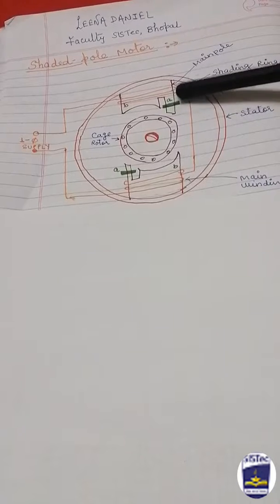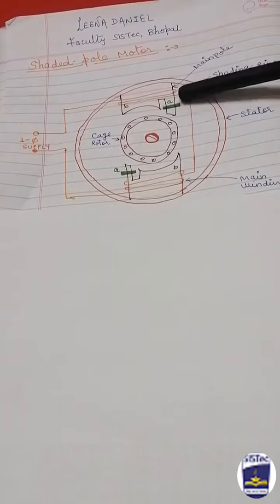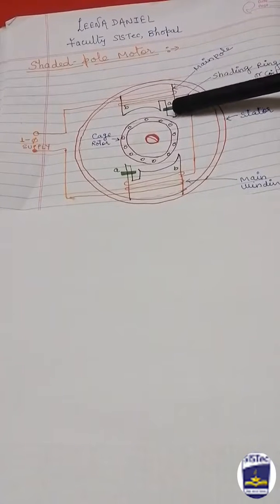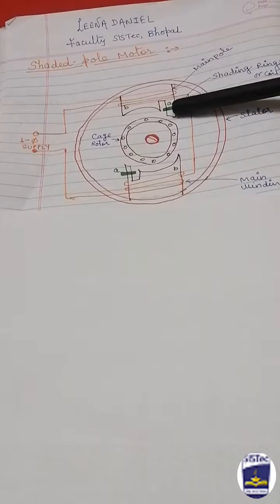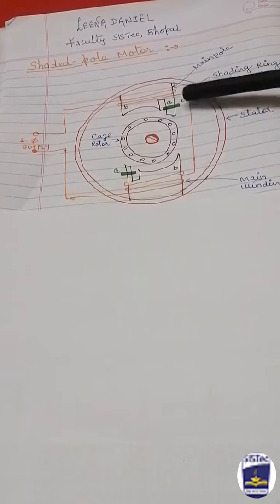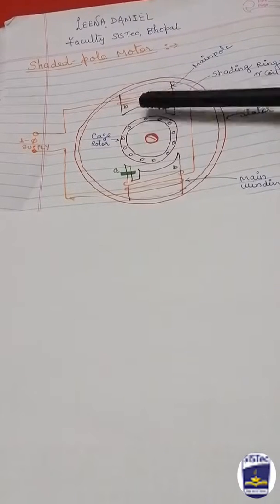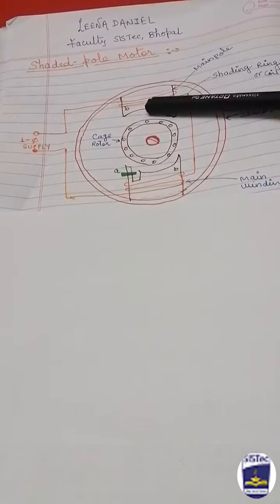Due to this voltage, a current circulates in this copper bar or copper ring. This induced current produces its own flux, which is called the induced flux. The flux of this shaded coil opposes the main core flux because it is created due to this main flux.